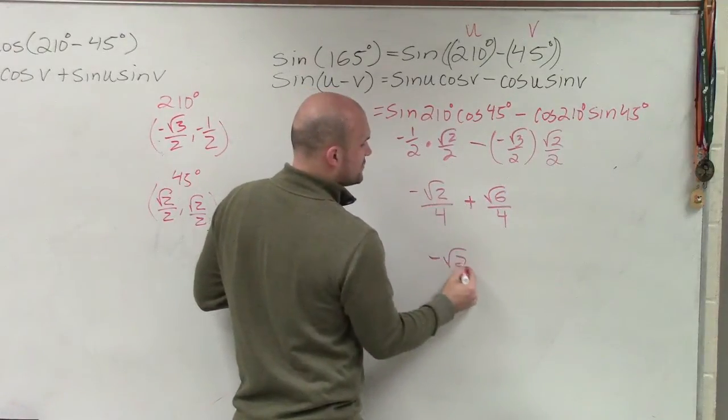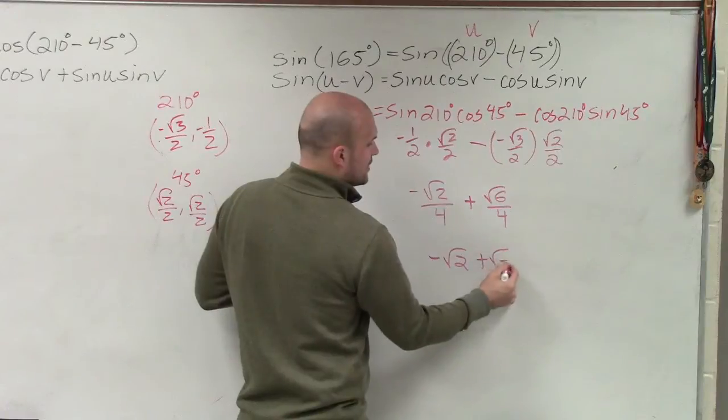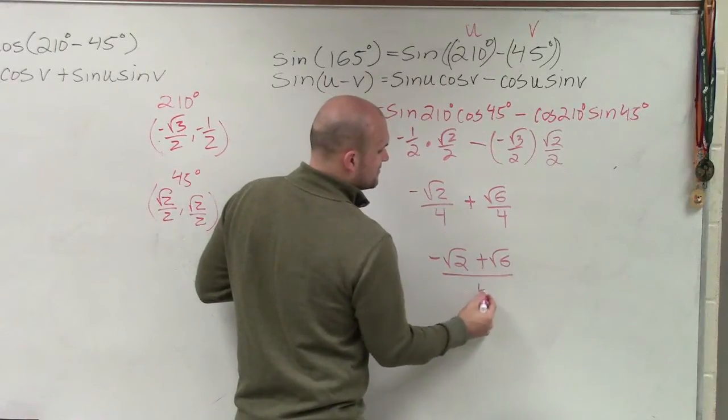Minus the negative now becomes a positive square root of 6 over 4. I can combine these into the negative square root of 2 plus the square root of 6 divided by 4.